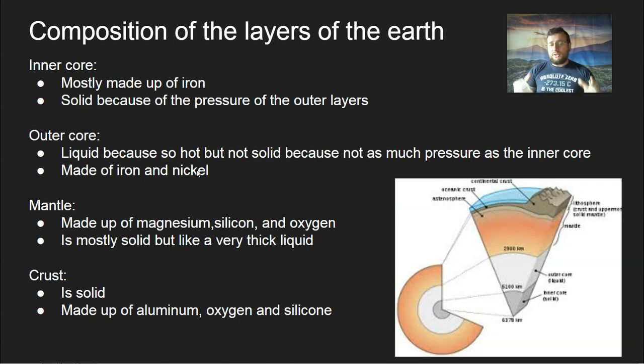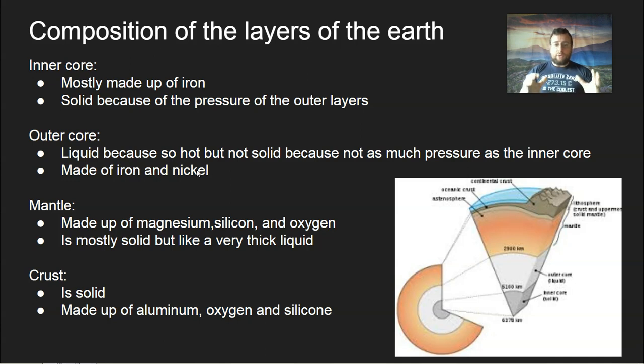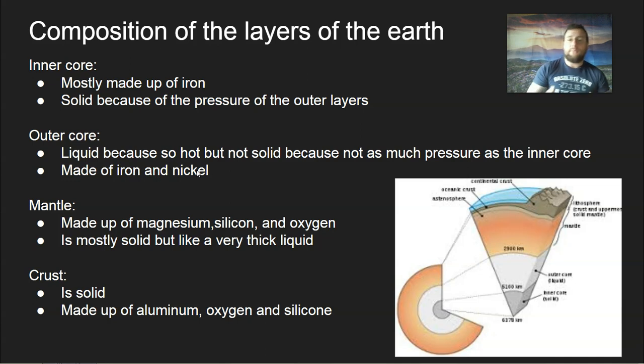The mantle is mostly solid but acts like a plastic that actually flows around, carrying heat from the core towards the crust. The crust is solid and that's where life on Earth is — a tiny little sliver — and it's made of aluminum, oxygen, and silicon, even lighter elements than the mantle is made up of.